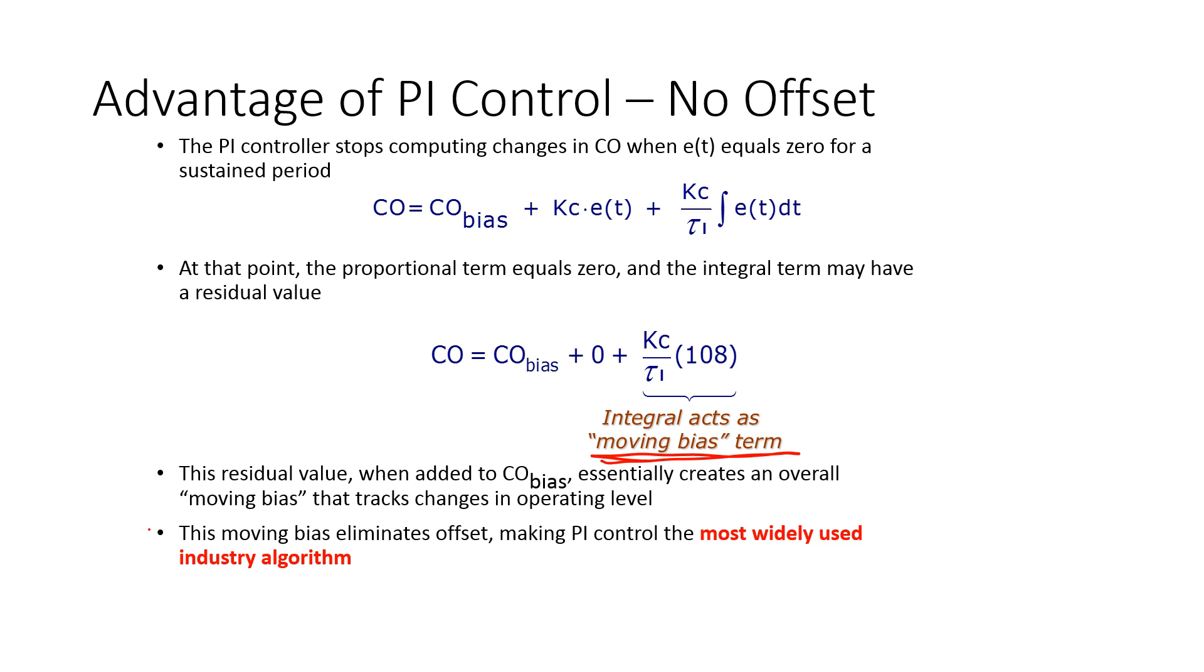One of the things to keep in mind, for PID controllers, the PI form is probably the most widely used in industry. Most people don't put a derivative term on there, only in special cases where you want to try to limit the amount of overshoot.